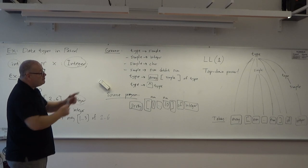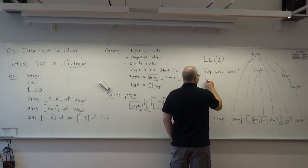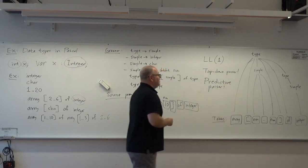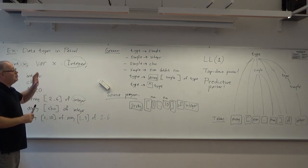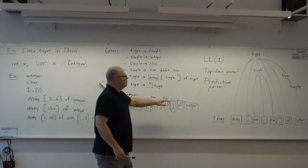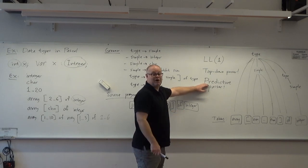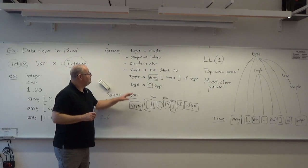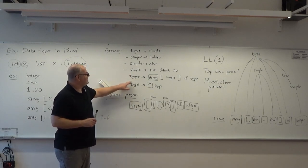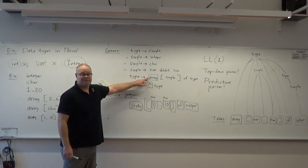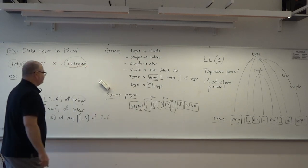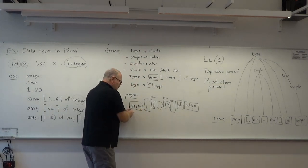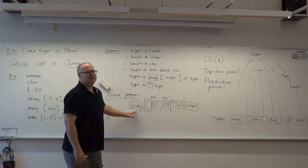A top-down parser of this version is also called a predictive parser, because there was never any doubt about which rule to use — we could always predict which rule is the right one. There are never two rules for the same non-terminal that start with the same token. The '1' means we only need to look at one token ahead.